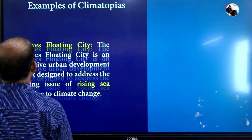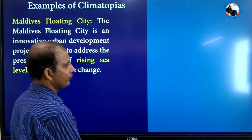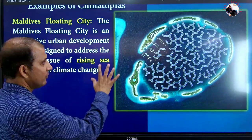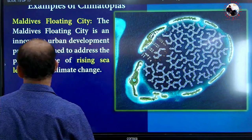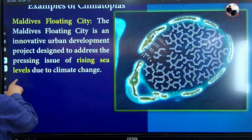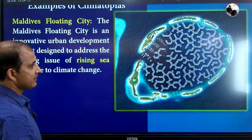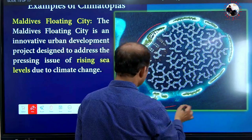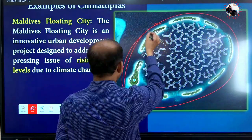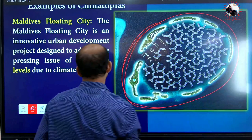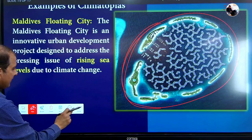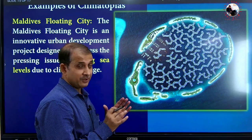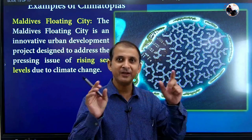Another example is the Maldives Floating City. These cities are being built at a certain level on the water. These are some of the new designs basically happening across the globe. Climatopia is a futuristic vision for urban development and climate resilience.